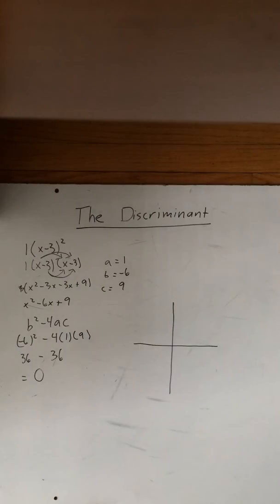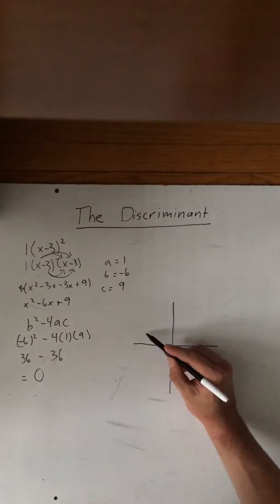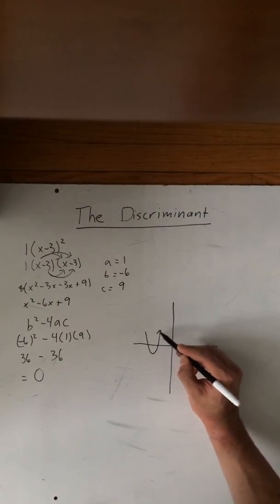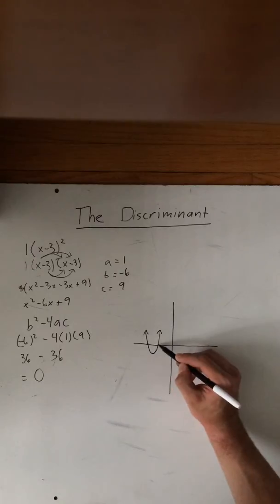If it is positive, then it is going to have two x intercepts, which looks like this. It is going to have two x intercepts, which would be here and here.